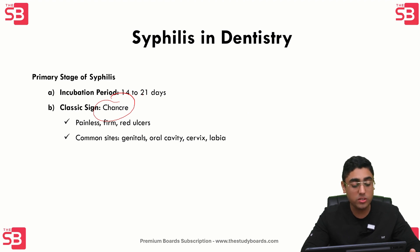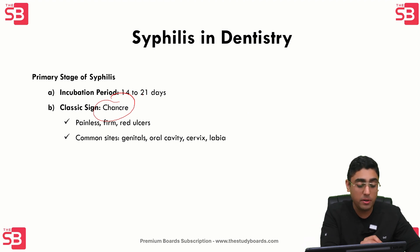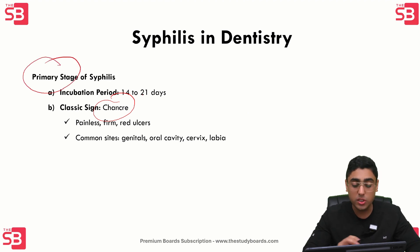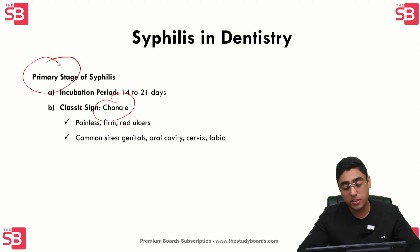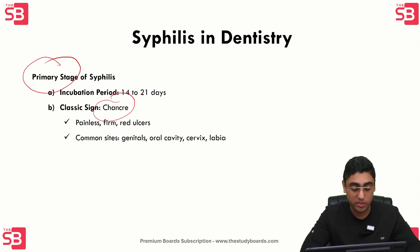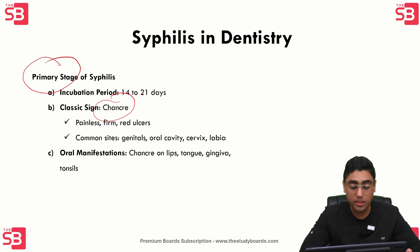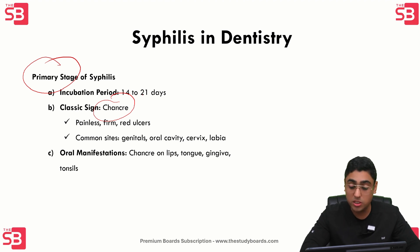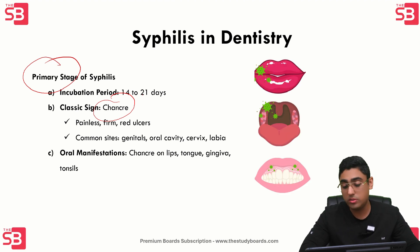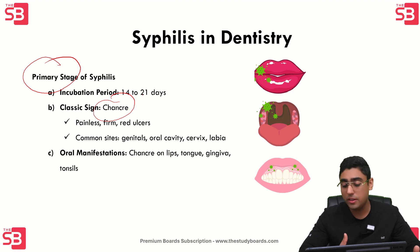Patients suffering from the primary stage have certain oral manifestations. These patients present with chancre on the lips, tongue, gingiva, or tonsils. Sometimes these are very painful as well because of secondary infections that can happen alongside.